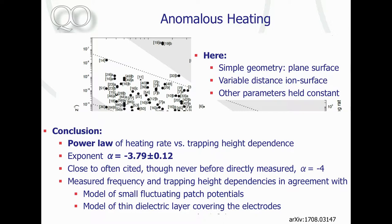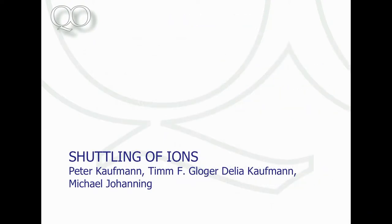All these models have different combinations of scaling with distance and with frequency. Looking at what matches the scaling we observed, we see that the model of patch potentials fits nicely, and also the model of a thin dielectric layer covering the electrode — in a typical real experiment, your gold or whatever electrode is typically covered with some contaminant. These models are consistent with our results, and this is an important contribution to a long-standing question in ion trap physics and possibly beyond.